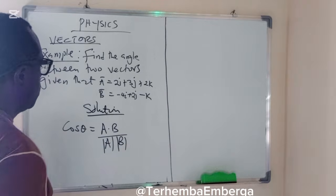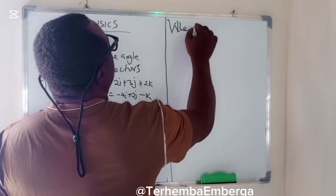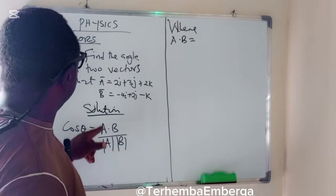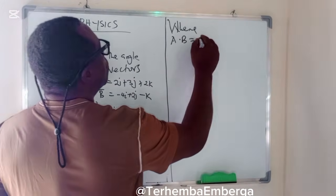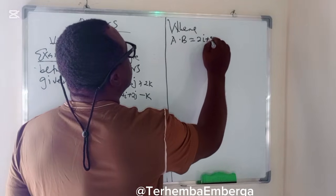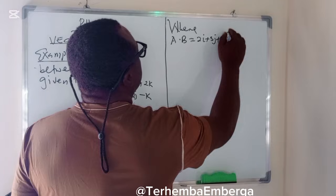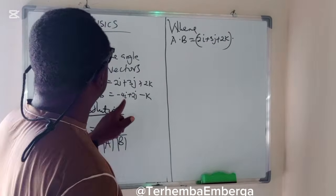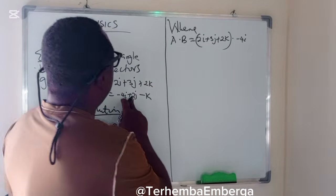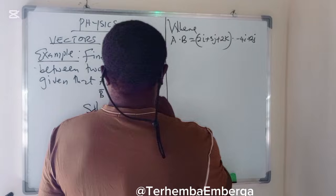Where A dot B is equal to 2I plus 3J plus 2K dot minus 4I plus 2J minus K.